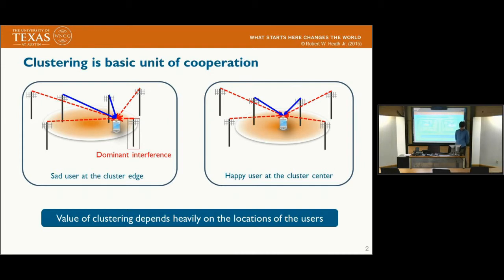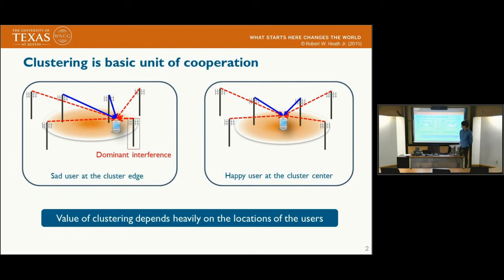However, in the clustering-based approach, the value of the cooperation heavily depends on the location of the user. For example, in the right-hand side case, the user is located at the cluster edge. In this case, the dominant interference mainly degrades the performance of the user, so the cooperation benefits become negligible.